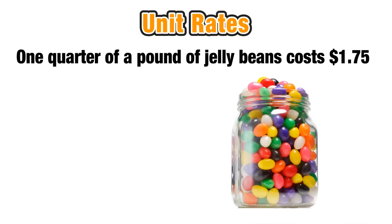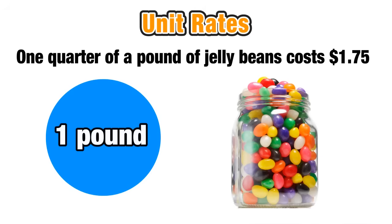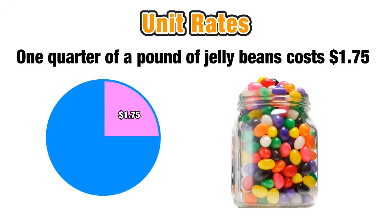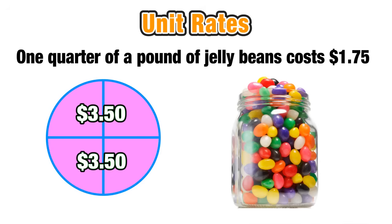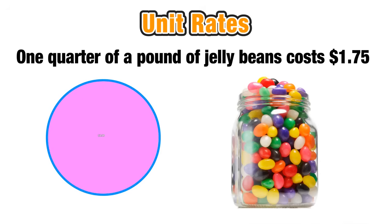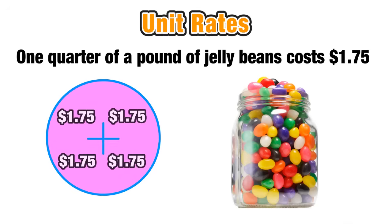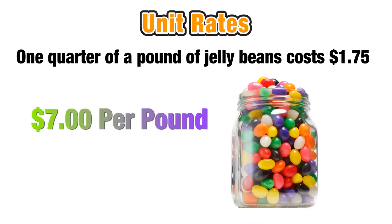Another example considers one quarter of a pound of jelly beans that cost $1.75. The unit rate we want to find is how much one pound of jelly beans costs. If this circle represents one pound, and one-fourth of a pound costs $1.75, then two quarters cost $1.75 times 2, which equals $3.50. Adding another half gives another $3.50, so $3.50 plus $3.50 equals $7.00 — the price per pound. We had to do $1.75 times 4, which equals $7.00. These jelly beans cost $7 per pound.